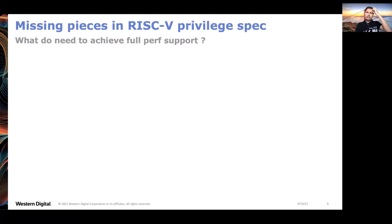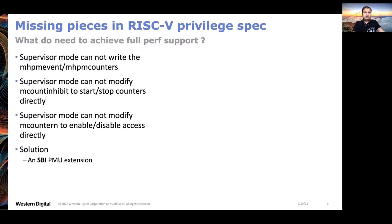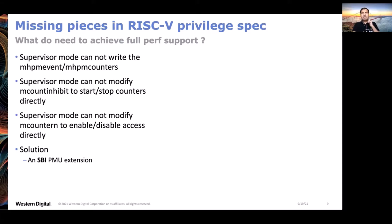What is exactly missing to have full PERF support? First, supervisor mode needs to access the event and counter registers - it needs to be able to start and stop the counters and also enable and disable access bits. The simple solution would be to make those CSRs readable and writable from supervisor mode. But since RISC-V is an evolving specification that must remain backward compatible, we cannot just make an incompatible change. That's why the solution adopted is an SBI PMU extension, which allows supervisor mode to perform these operations while accessing the counters.